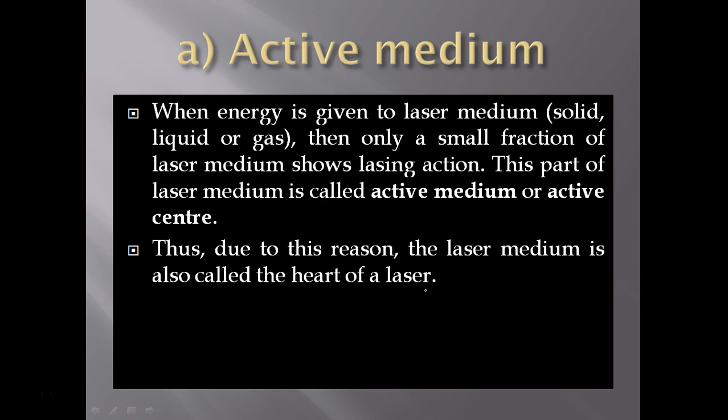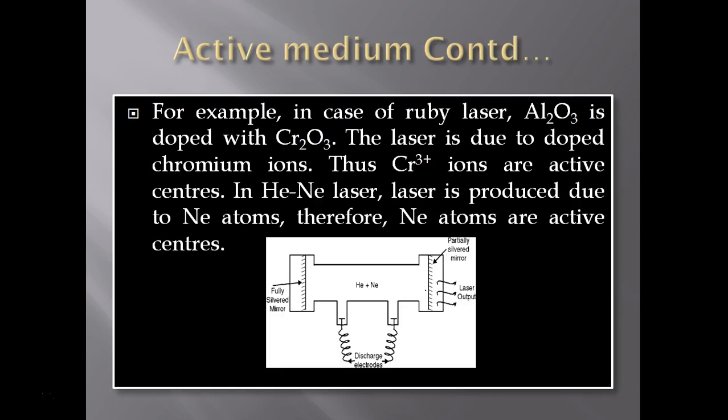For example, in the case of ruby laser, Al2O3 is doped with Cr2O3. The laser is due to doped chromium ions. Thus Cr3+ ions are active centers.